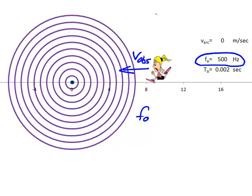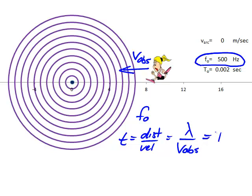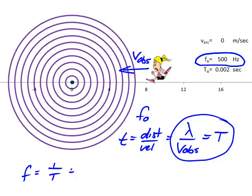Now, imagine the compressions of the sound wave are somehow frozen in place — still, just like in this diagram. As the observer moves to the left, they're going to run into those stationary compressions. How much time does it take to go from one compression to the next compression? Time is distance over speed, so T equals lambda over v-obs. I've used a capital T, our symbol for the period of a wave, because in this case it is the period of the sound heard by the observer moving through the stationary compressions.